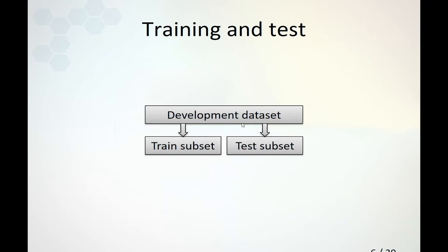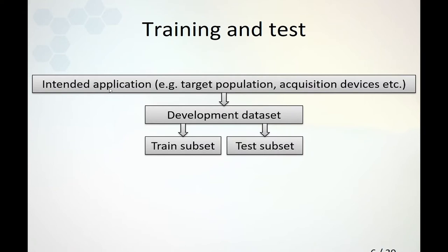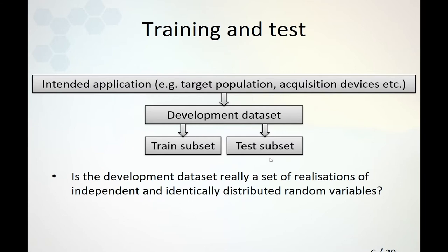The question is: what does this test set performance represent? It represents an unbiased performance estimation of the samples in the development dataset. But does the development dataset reflect the intended application of your system? That could be a particular set of population subjects, particular imaging devices, and other characteristics defining what you expect to use your deep learning model for. Normally, we assume the development dataset is a set of realizations of independent and identically distributed random variables from the intended application.